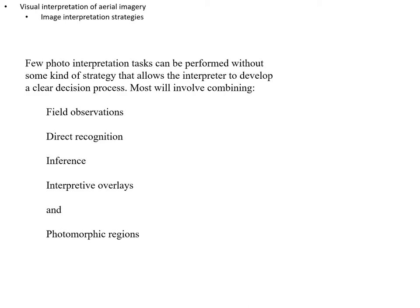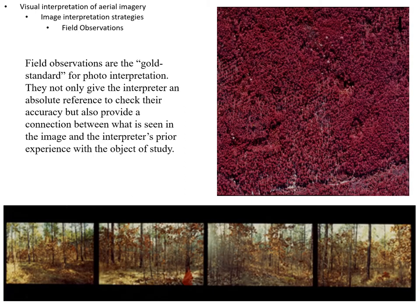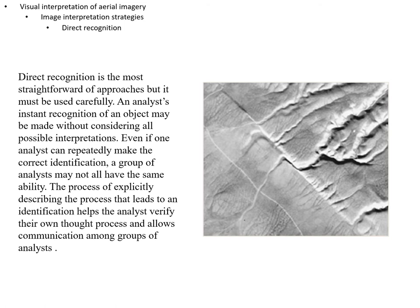Field observations are the gold standard for photo interpretation. They not only give the interpreter an absolute reference to check their accuracy, but also provide a connection between what you see in the image and the interpreter's prior experience with the object of study. Here we have a color infrared image in the upper right-hand corner, and along the bottom are four photos taken in each of the cardinal directions of the same stand as viewed in the field, giving you an immediate sense of how to relate what you see in the field to what you see in the image.